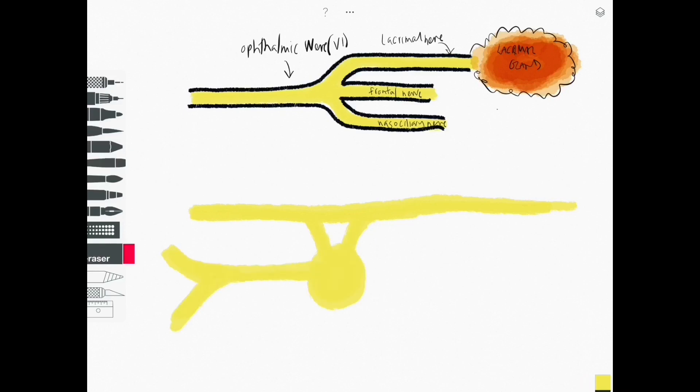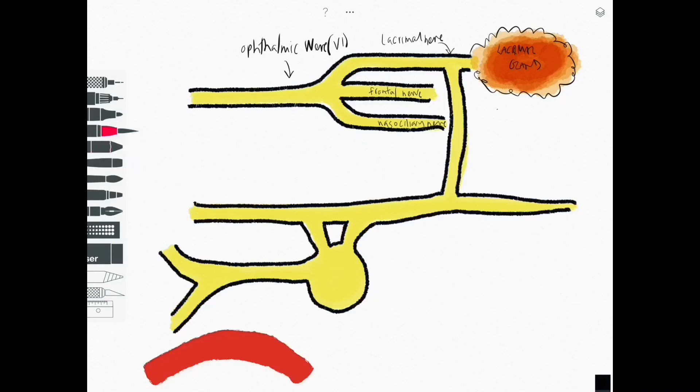Also important to this story for the autonomic supply to the gland is the maxillary division which is V2 of trigeminal and this is important because autonomic fibers need to hitchhike a ride along the trigeminal nerve in order to access the gland.